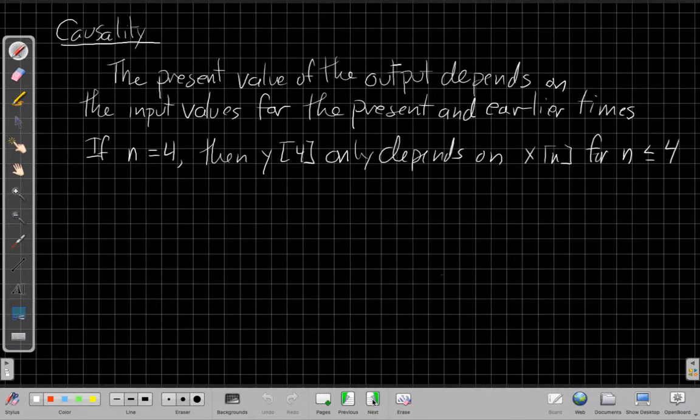When we say a system is causal, what we mean is that the present value of the output depends on the input values for the present and earlier times. It means the output doesn't depend on the input in the future. It only depends on now and the past. If I were going to build a real system, that has to be the way, right? I can't build a real system that knows the future. If I could build that system, I would be making gazillions of dollars in Vegas or on the stock market, not making videos about discrete time linear systems for YouTube. For a specific example, if n equals four, that means the output y of four only depends on x of n for n less than or equal to four. So it can only depend on the input for current or earlier time indices.